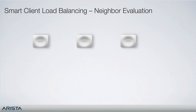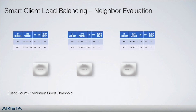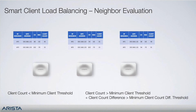As channels are scanned for RRM or WIPS, Arista APs build RF neighbor tables. This table includes the current client count gleaned from beacons of nearby Arista APs. When smart client load balancing is triggered, the AP determines how many neighbors are acceptable alternatives. A neighbor is determined to be acceptable if it meets either of two criteria: the client count is less than the minimum client threshold (default 30), or the client count is greater than the minimum client threshold and the client count difference is greater than the minimum client count difference threshold, which by default is 5.